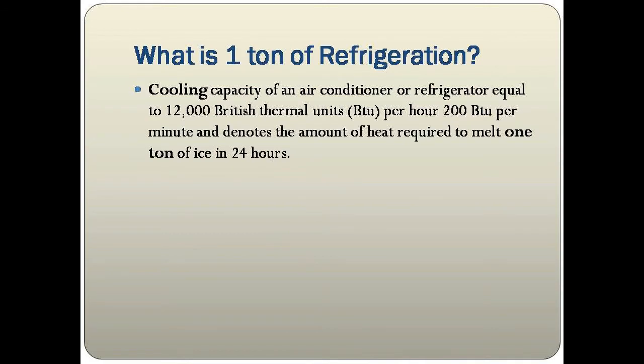Before going to the calculation, we need to know what is one ton of refrigeration. The cooling capacity of an air conditioner equals 12,000 British Thermal Units per hour — so one ton equals 12,000 BTU. For example, if you have one ton of ice kept in a room, the heat required to melt that ice completely in 24 hours equals 12,000 BTU, or one ton of refrigeration.